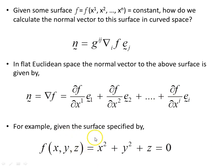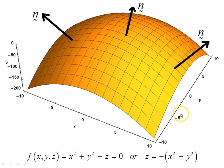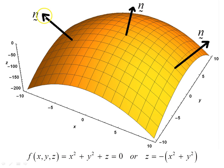For example, given the surface specified by f(x, y, z) = x² + y² + z = 0, let's have a little look at what that looks like. Here it is — a 3D plot — and z = −x² + y², this object here equal to 0. Here's our surface. Each of these are normal vectors and they point in different directions at different places on the surface. These normal vectors are perpendicular to the basis vectors at each point. If you picture this point here, the basis vector pointing in the y direction and this one pointing in the x direction, the normal will be perpendicular to both of those.